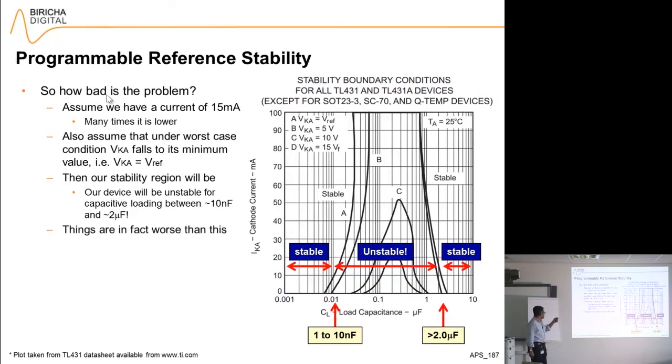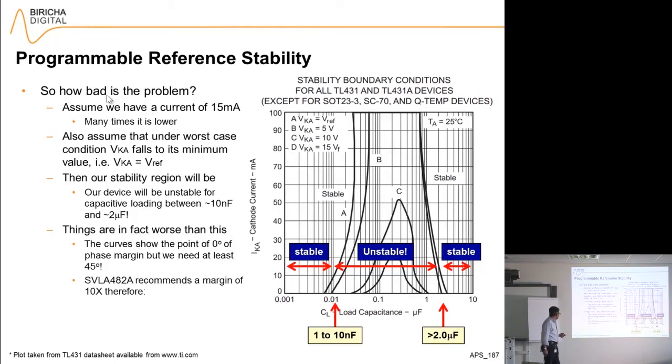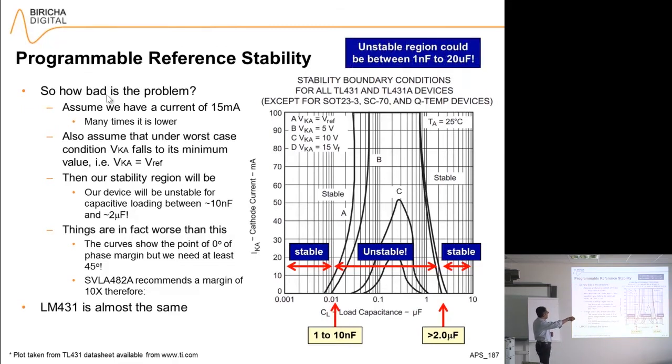Things get worse a little bit for us here, because the curves show where the phase margin is 0. If we want 45 degrees of phase margin, the documents recommend allowing a margin of 10. So if I multiply these ranges by 10, then I end up with an unstable region of anything between 1 nanofarad to 2 microfarads. That is quite limiting, especially because I don't know what is the exact value of my capacitive loading. That's for TL431.